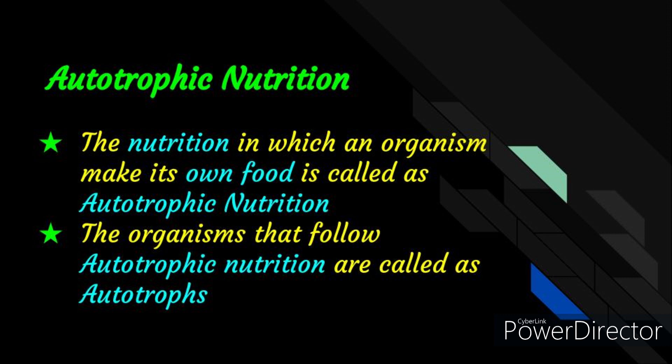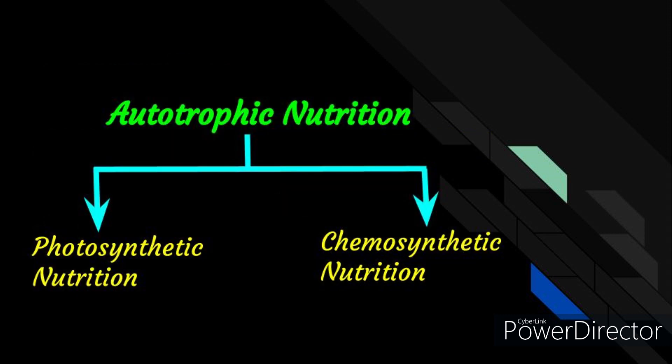Autotrophic plants are able to produce food, so they are also called producers. Depending upon the source of energy used in the preparation of food, autotrophic nutrition is divided into two types: photosynthetic nutrition and chemosynthetic nutrition.